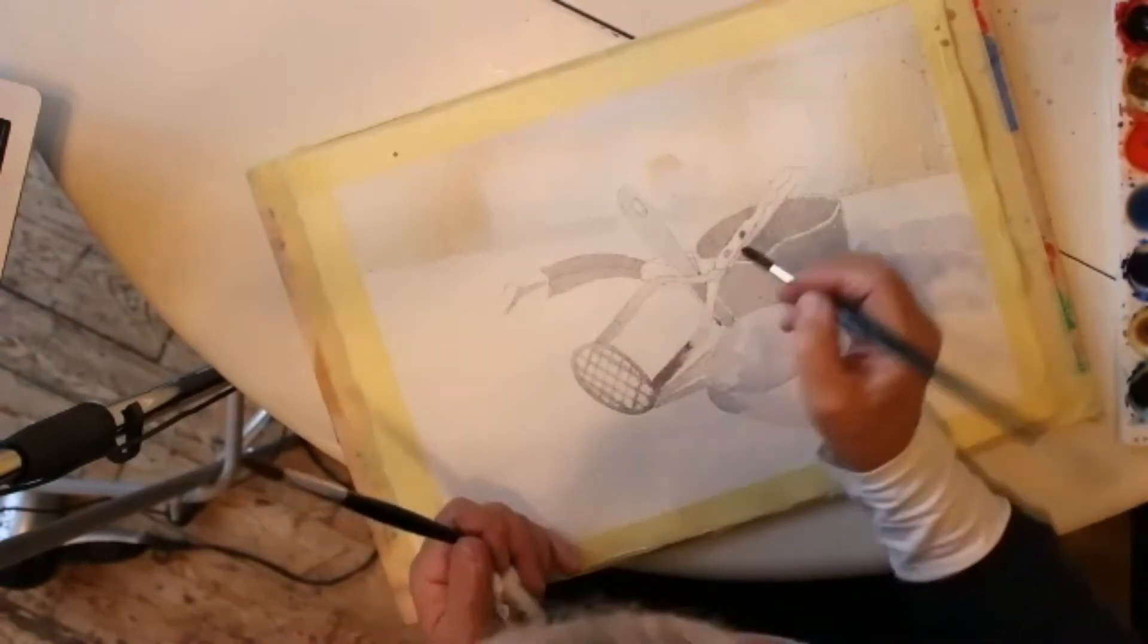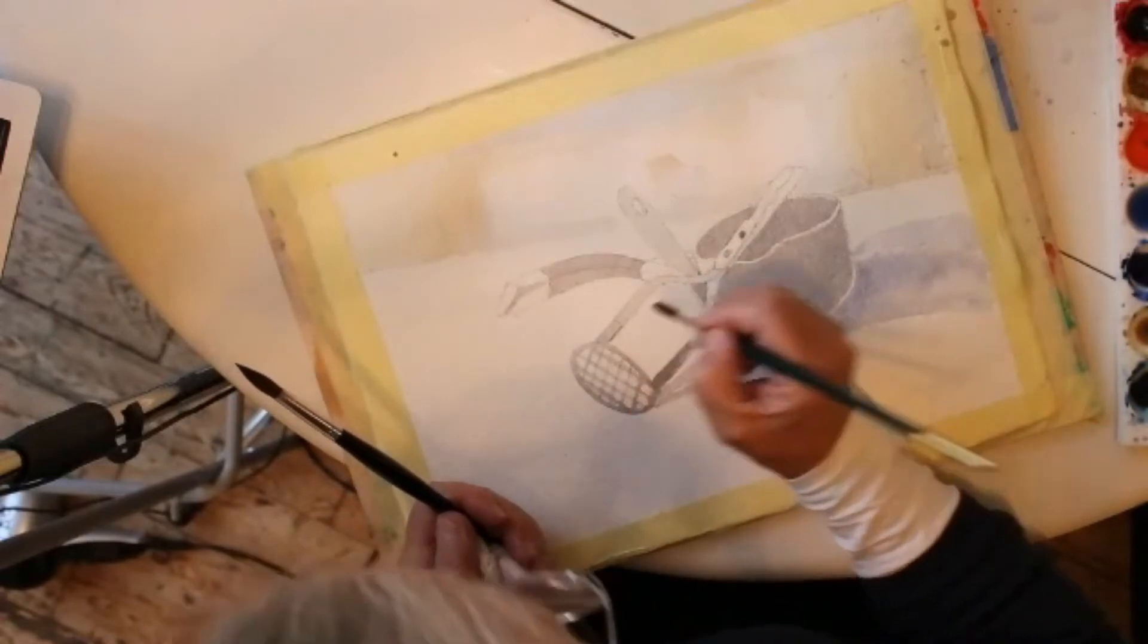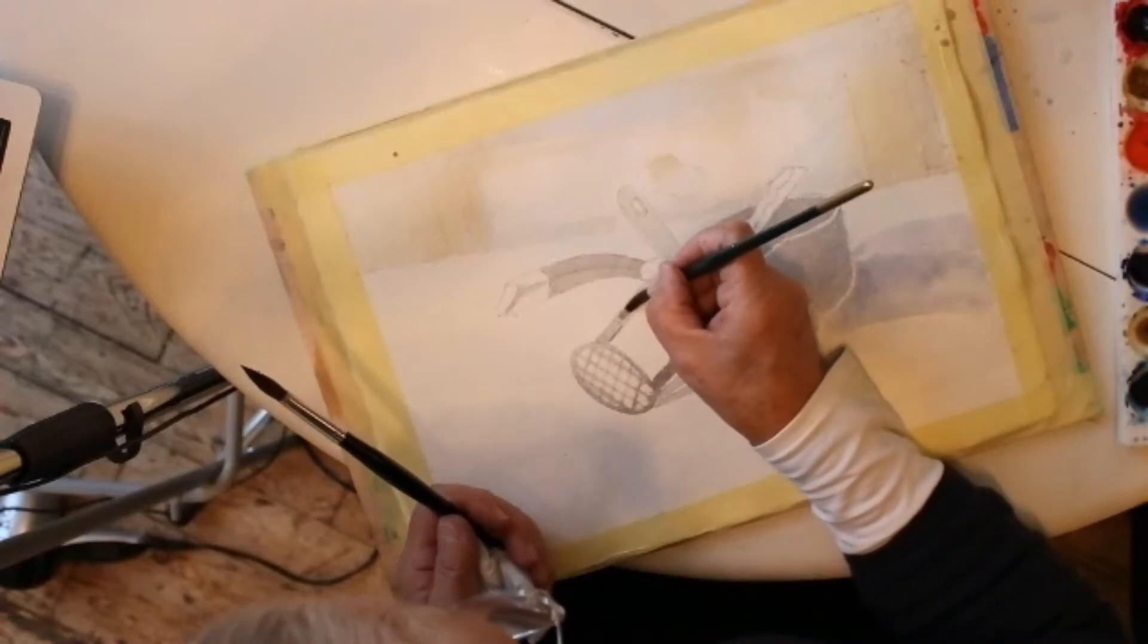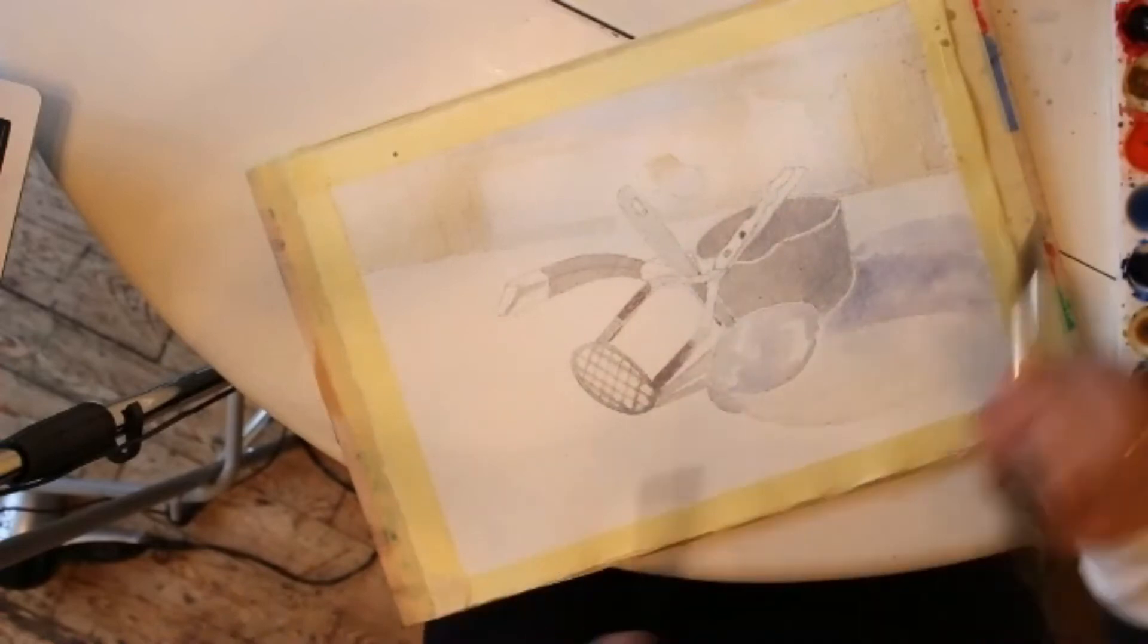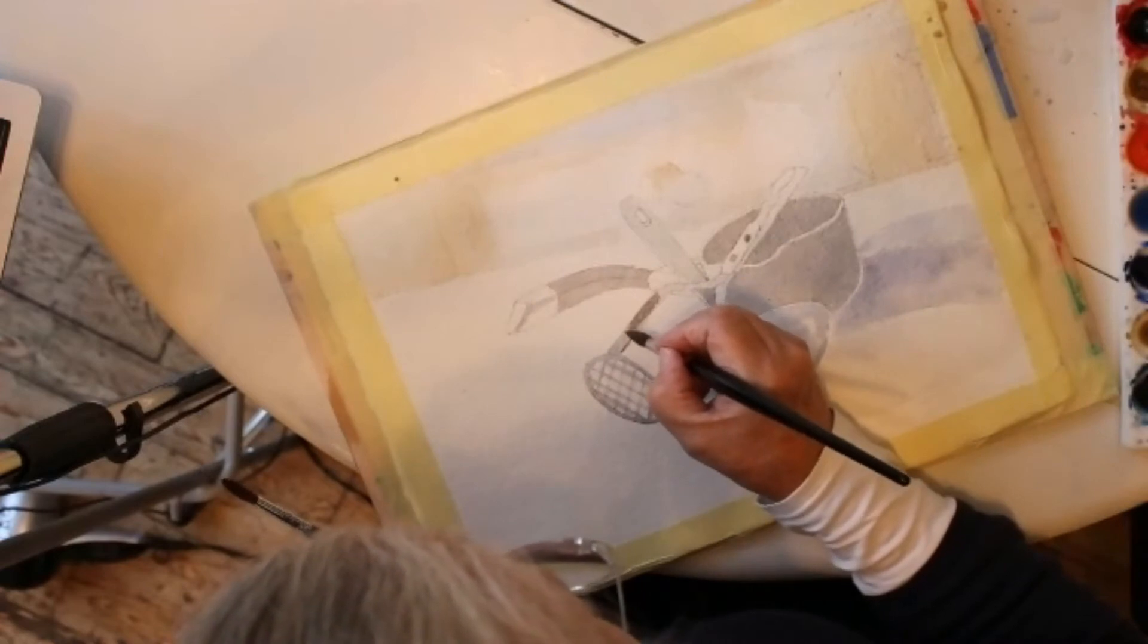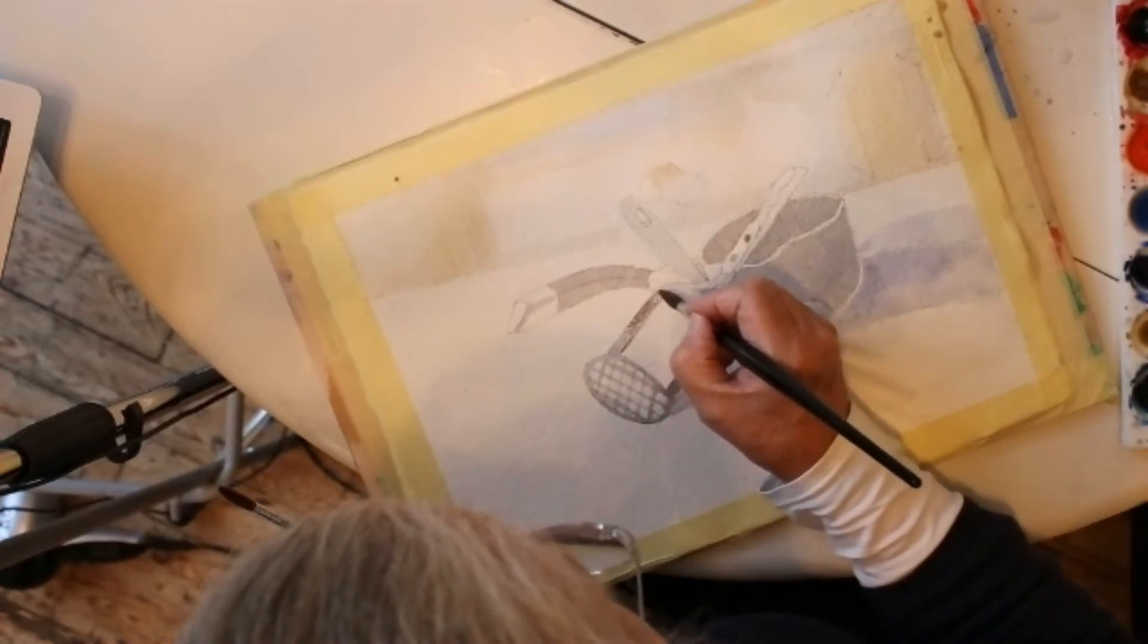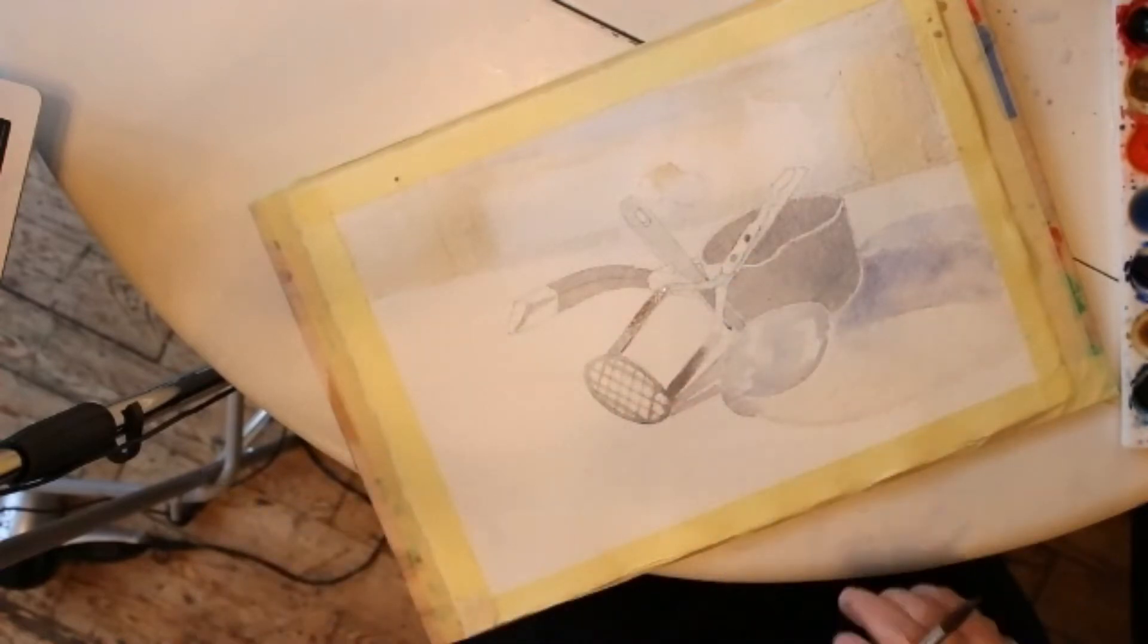When you just get it right, it'll fuse exactly as you want it to, but you have to get that magic moment when it's not too wet and not too dry. Along the top here it's already going a bit dry, so I can go back with just water and soften it back at the end so it doesn't create a tide line or a hard edge.